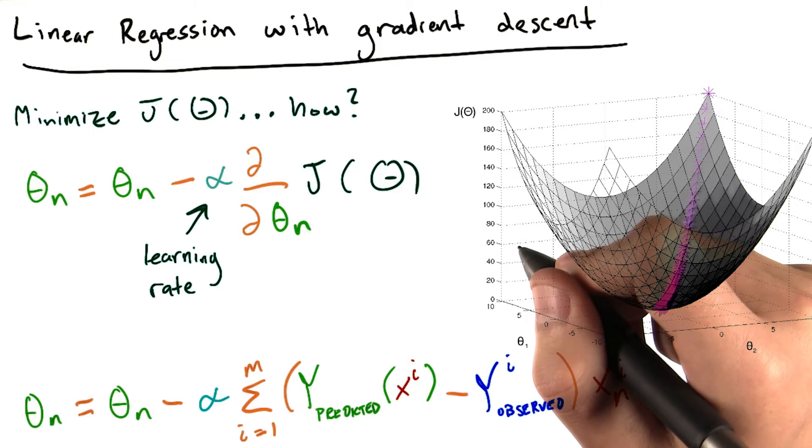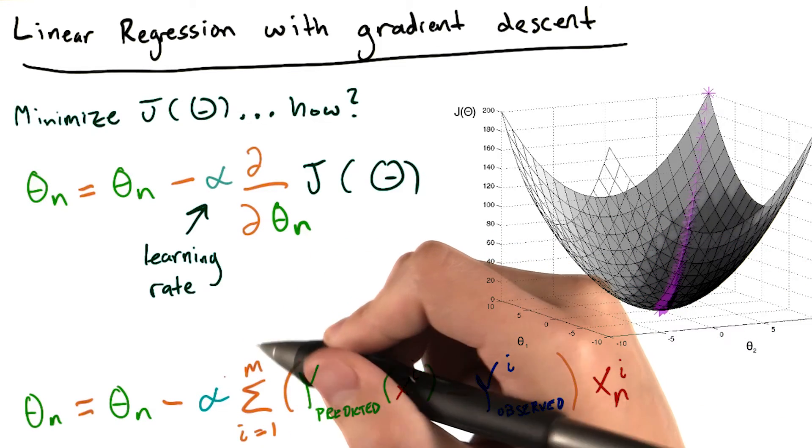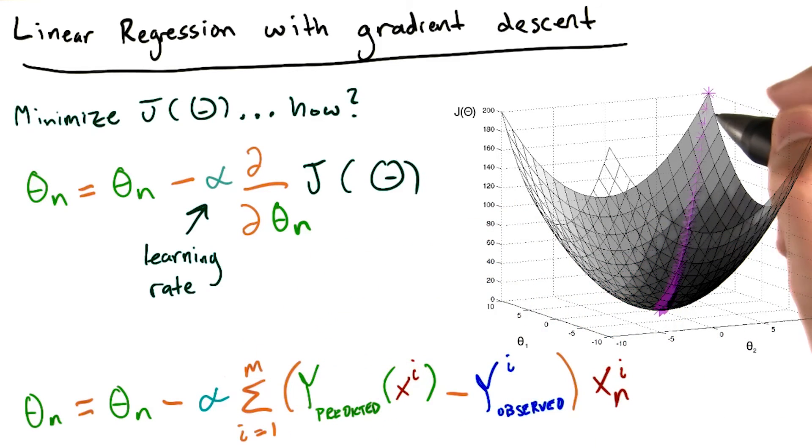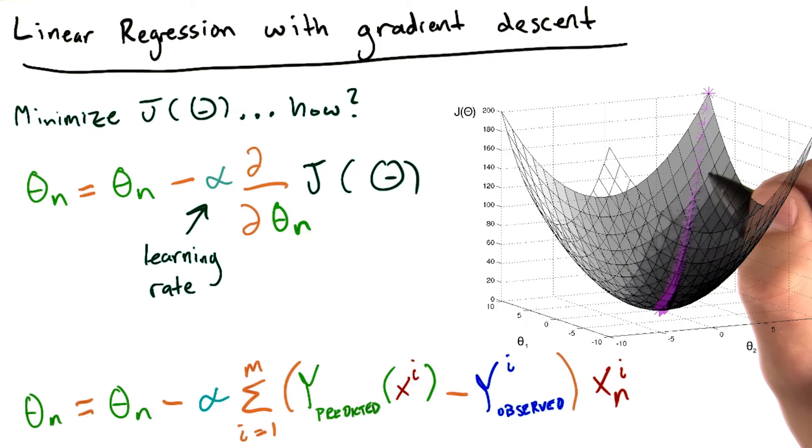You may be wondering how we set a value for the learning parameter alpha. A rigorous discussion is beyond the scope of this course. However, the important thing to note is that a smaller learning rate will cause the algorithm to take longer to converge on the optimal theta values, since you're taking smaller and smaller steps down the curve.